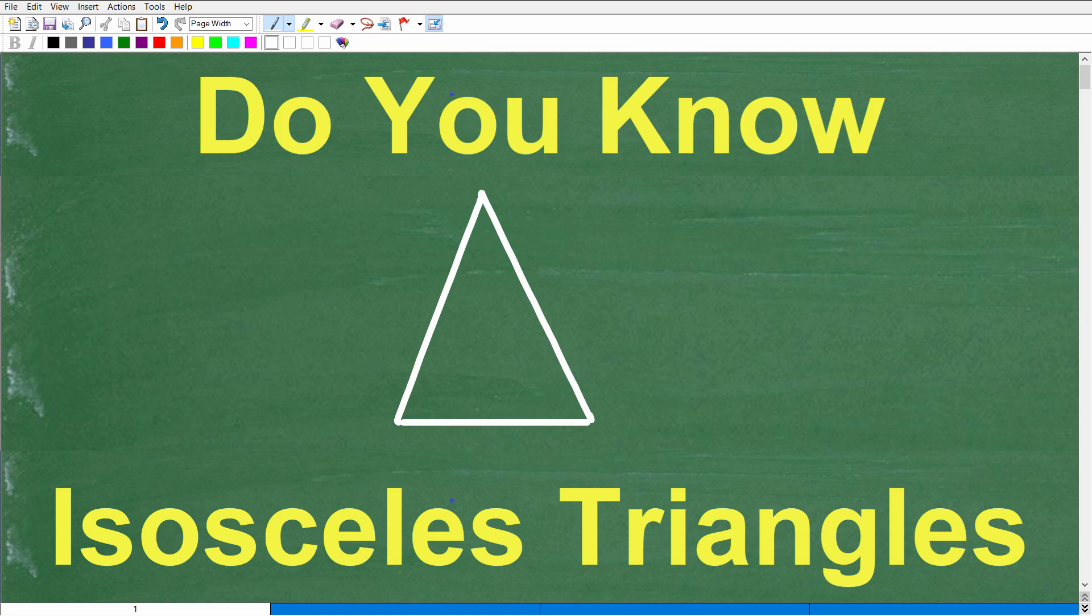And in this particular video, we're going to go ahead and define what is an isosceles triangle. Now, this is not that difficult, and this kind of falls under the category of triangle classification. So when you're studying triangles, there's different types of triangles, and you need to know the characteristics of each type of triangle.